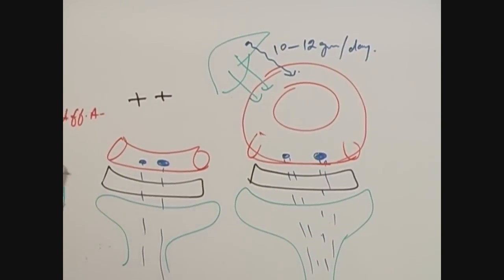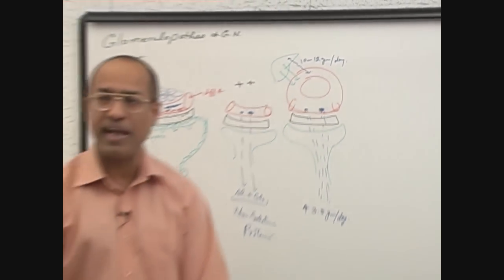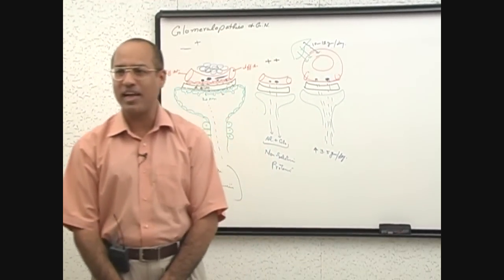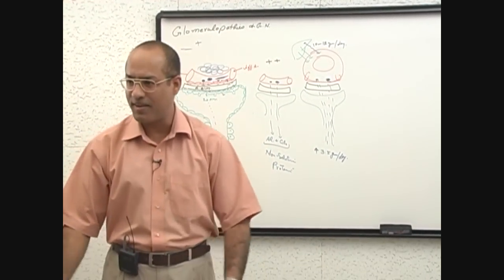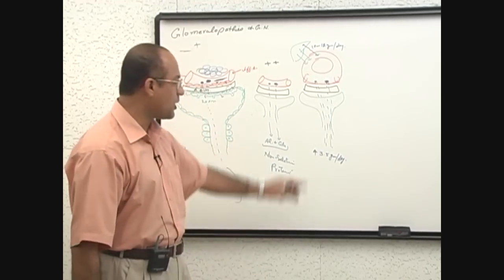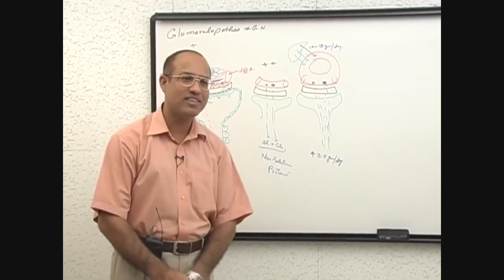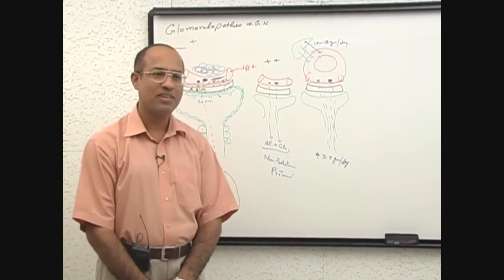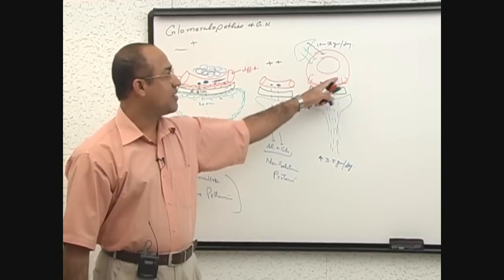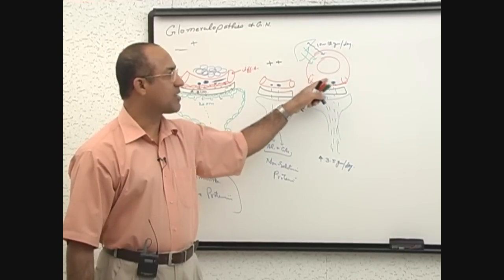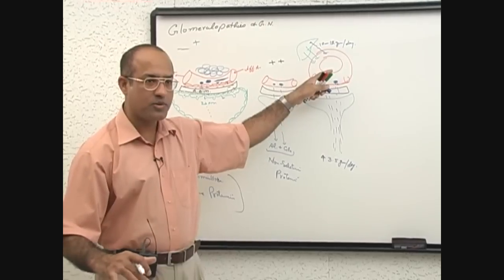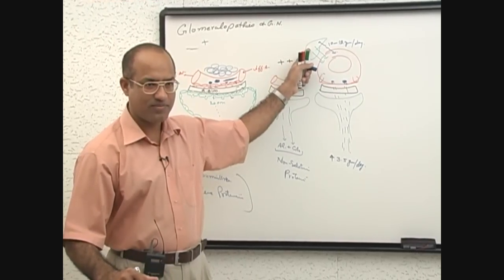The liver can produce 10 to 12 grams per day of plasma proteins. But whenever urinary losses exceed 3.5 grams per day, blood protein levels start going down in spite of full production by the liver.